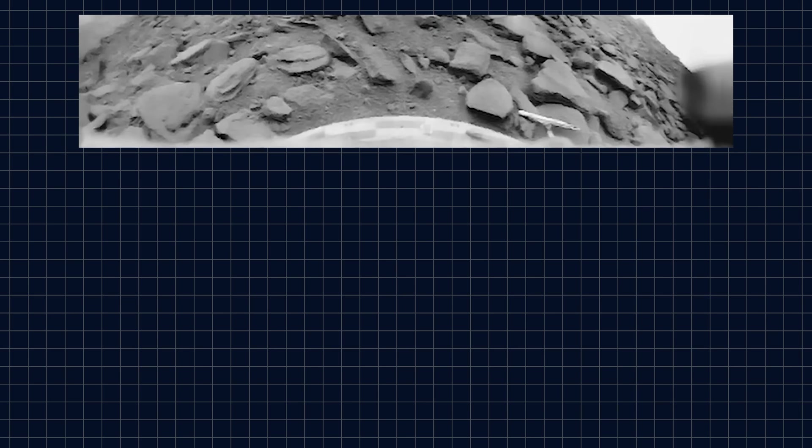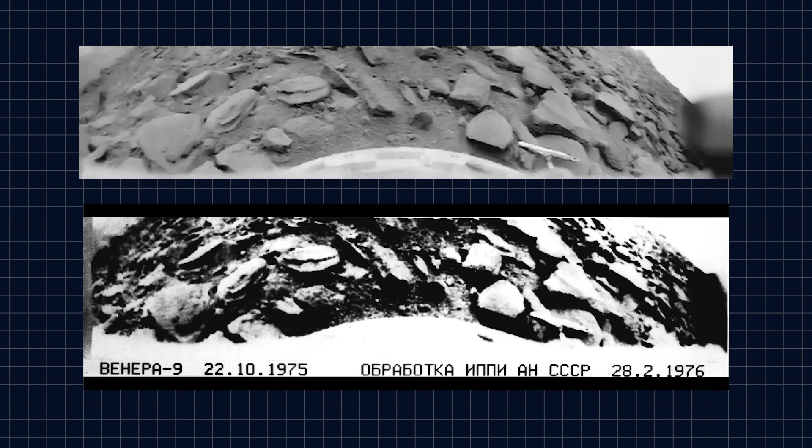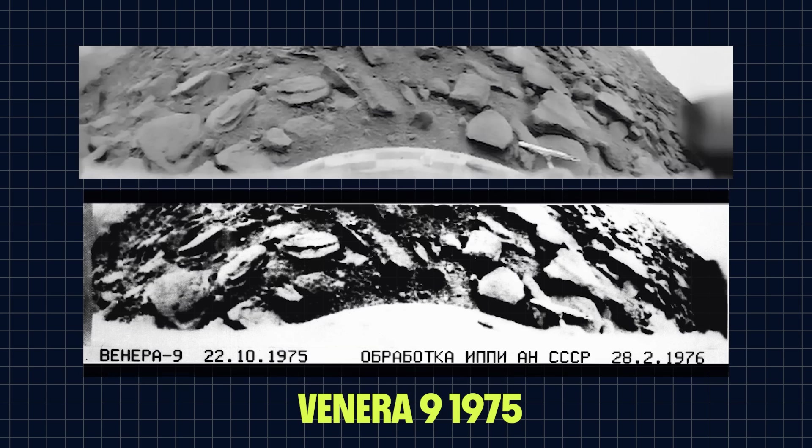But what about those cameras? Well this is the first photograph ever taken of Venus. It was captured on black and white film by Venera 9 in 1975. What we are looking at is a field of broken jagged rocks surrounded by a sand-like material. It's not exactly breathtaking. The photo is only interesting because it was taken on Venus, but still very cool.